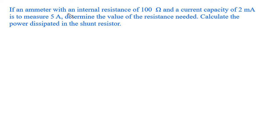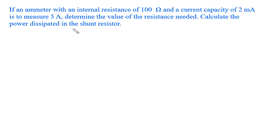If an ammeter with an internal resistance of 100 Ohm and a current capacity of 2 mA is to measure 5A, determine the value of the resistance needed. Calculate the power dissipated in the shunt resistor.